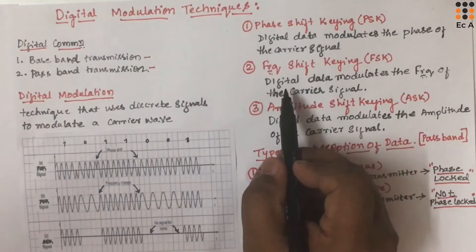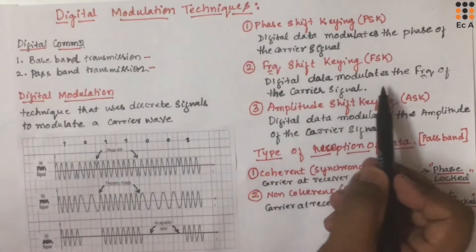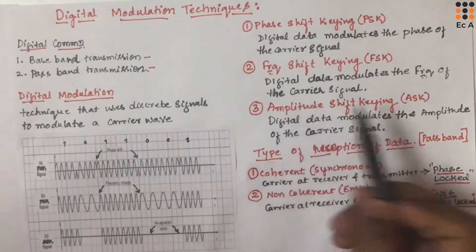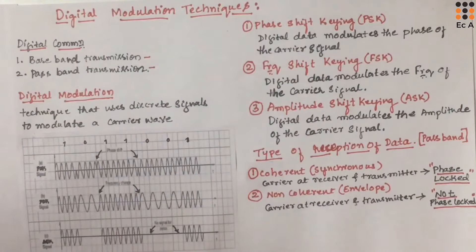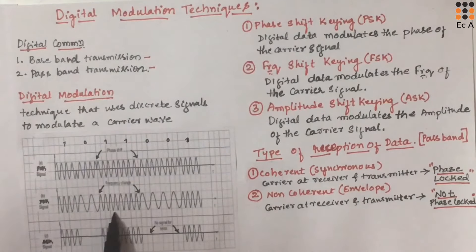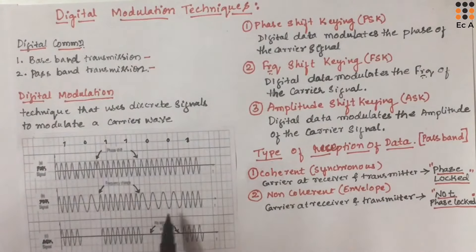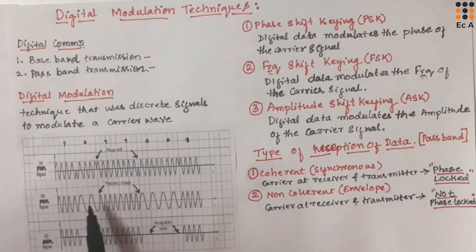The second type of digital modulation is frequency shift keying. In frequency shift keying, the digital data modulates the frequency of the carrier signal. When there is a transition from 1 to 0, the frequency of the carrier signal is varied. Again, when there is a transition from 0 to 1, there is a variation in frequency of the carrier signal. When we are having the same sequence like 11 and 00, there will be no change in frequency of the carrier signal. Hence, there will be a change in frequency of the carrier signal only when there is a different sequence of data.